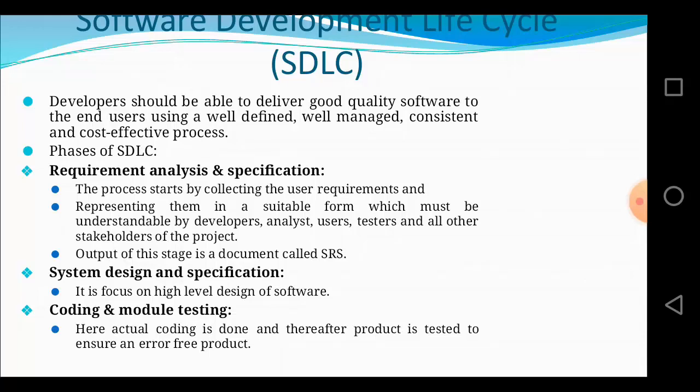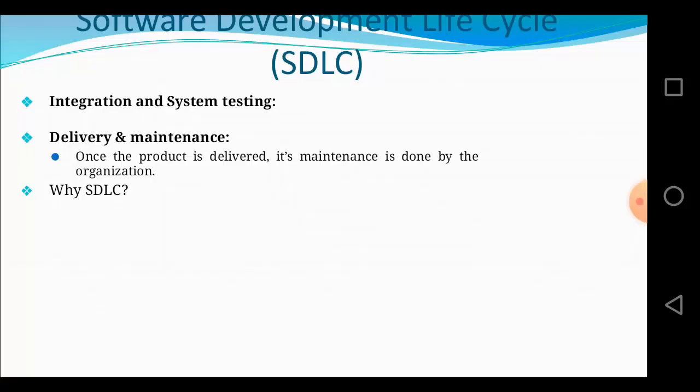The fourth phase is integration and system testing. Here the modules that were tested individually are integrated and combined together, and then we test whether the software is working properly. It is possible that when two modules are integrated, some errors are generated due to improper interfaces. That is called system testing — testing the complete software after it is fully built.